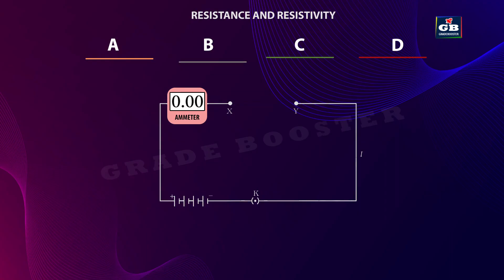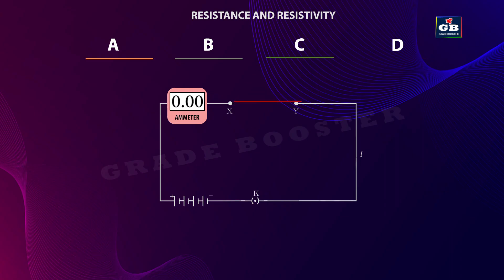Now replace wire B with wire C. In the case of wire C, very little current passes compared to wire B. Now replace wire C with wire D. With wire D, no electricity passes in the circuit, and no reading is observed on the ammeter.